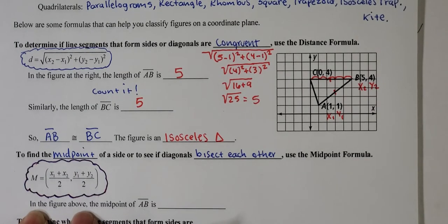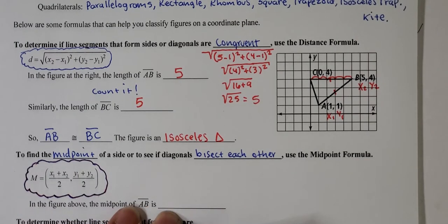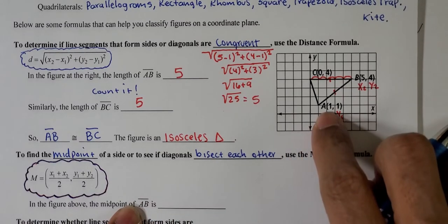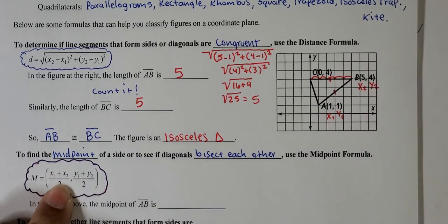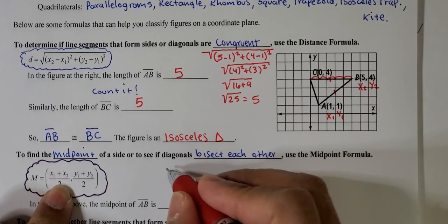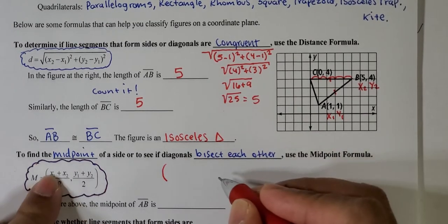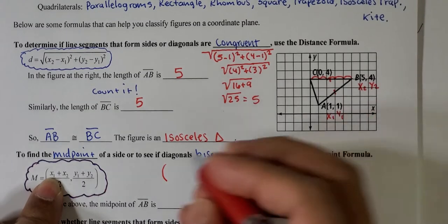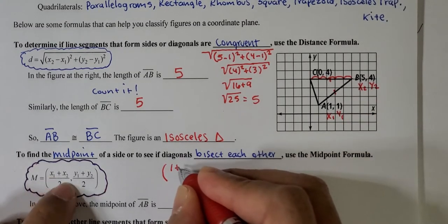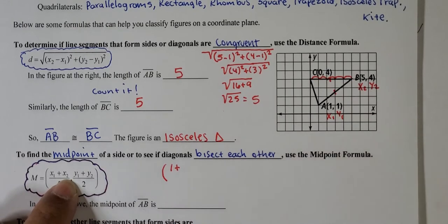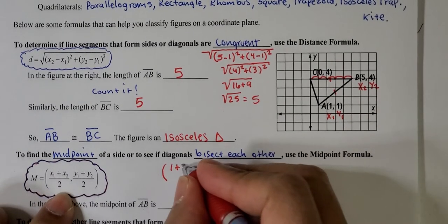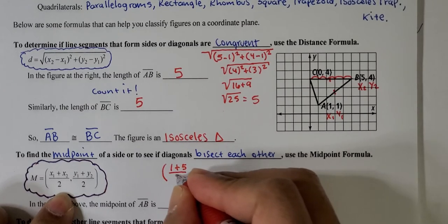Let's go over this example. It says in the figure above, the midpoint of AB is, I already have labeled A and B. So I'm just going to substitute the x1, x2, and y1 and y2 values into this formula. So my x1 value is 1, so 1 plus x2 is 5, right?